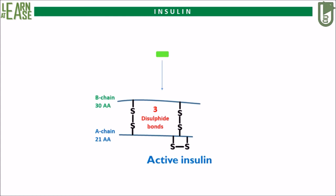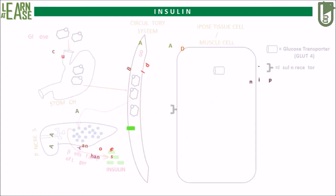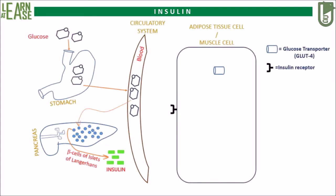Let us go back to the animation. The insulin produced by the beta cells is poured into the blood. Insulin is a hydrophilic hormone, so it can easily circulate in the blood without any help of a carrier molecule. Insulin then reaches the target tissue and binds to the membrane-bound receptor.